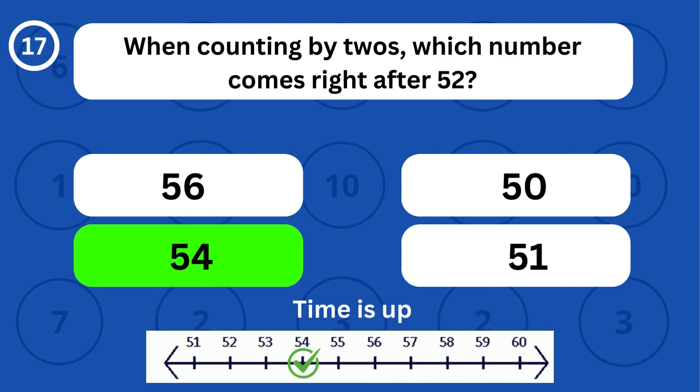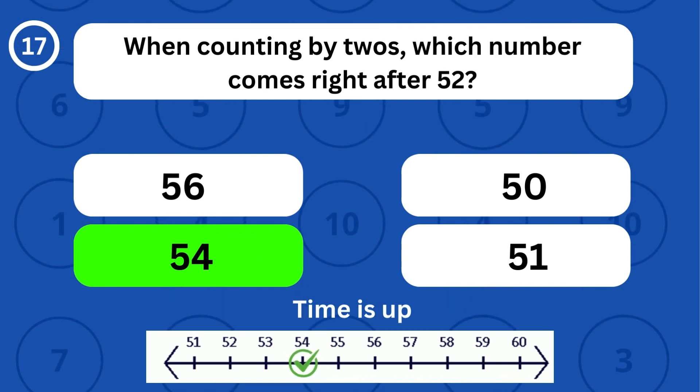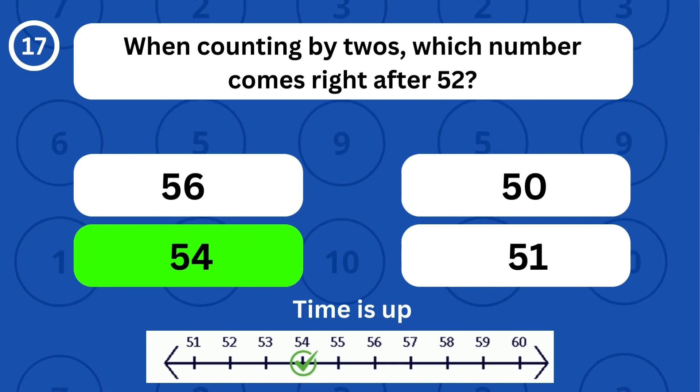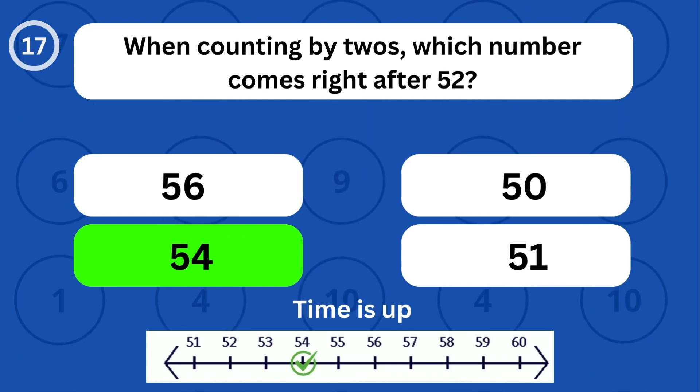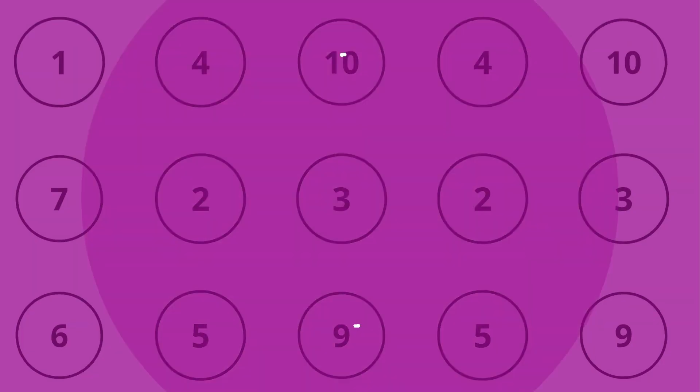When counting by twos, which number comes right after 52? The number 54 comes right after 52.